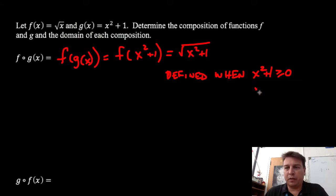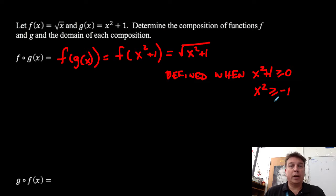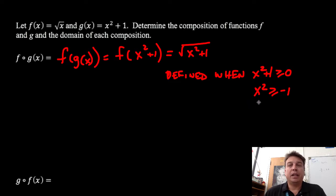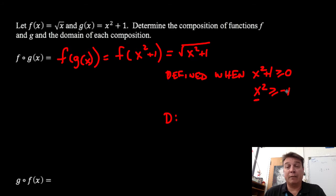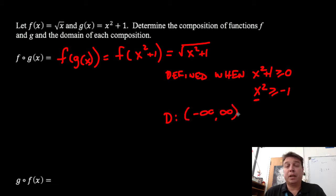Let's solve this: x squared has to be greater than or equal to negative 1. No matter what value I put in here, I'm going to square it — if I put negative 5 in, I get 25, which is greater than or equal to negative 1. If I put 2 in, I get 4, also greater than or equal to negative 1. No matter what value I substitute, it will always be greater than or equal to negative 1. So our domain here is negative infinity to positive infinity.